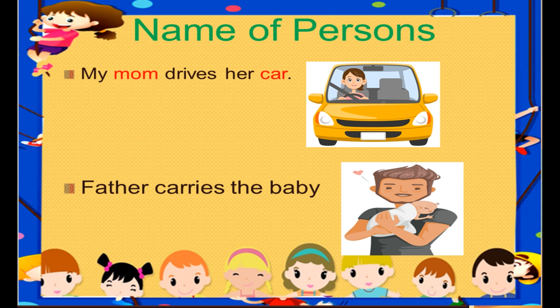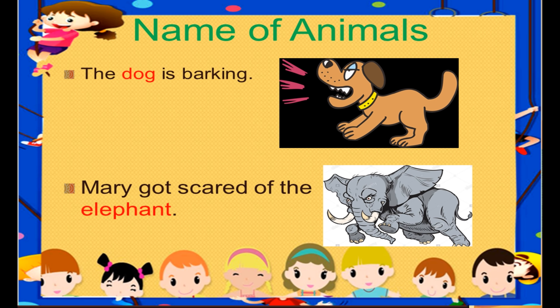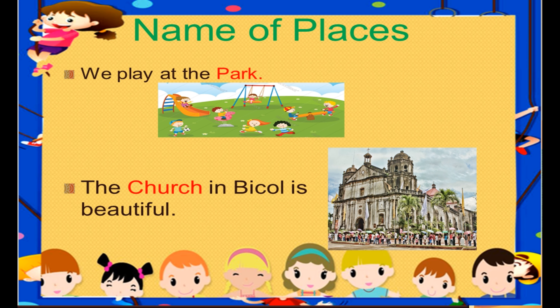Example of a name of a person: my mom drives her car — mom is a name of a person. Father carries the baby — father and baby are names of a person. Name of animals: the dog is barking — dog is an animal. Mary got scared of the elephant.